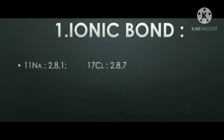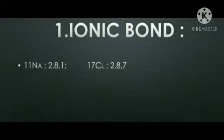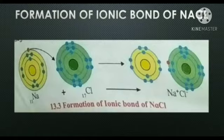First, Ionic Bond. Let us first see how the compound sodium chloride is formed from the atoms sodium and chlorine. The electronic configuration of sodium is 2, 8, 1 and the electronic configuration of chlorine is 2, 8, 7. That means the number of electrons in the outermost shell of sodium is 1, and the number of electrons in the outermost shell of chlorine is 7, as you can see in the diagram.